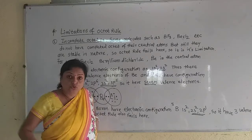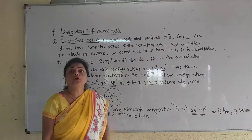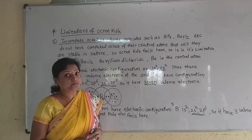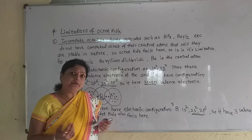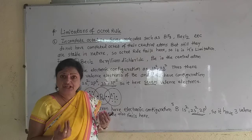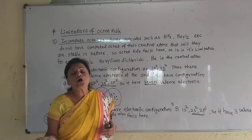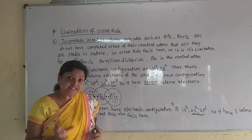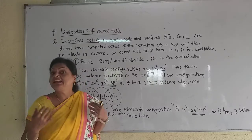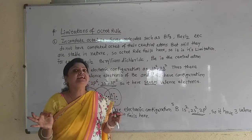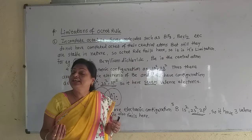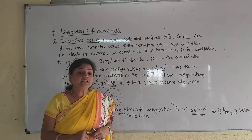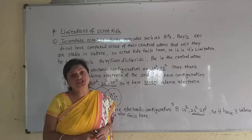Now what is the octet rule? The octet rule was also put forward by Lewis. He tells that during bond formation, every atom shares, gives, or gains electrons so that its valence shell — that is the outermost shell — contains 8 electrons, as that of the inert gases. And then the molecule gets stabilized. But there are some limitations of the octet rule.